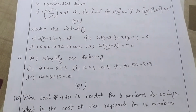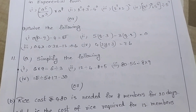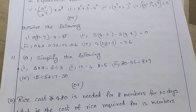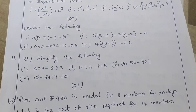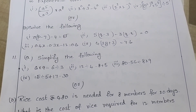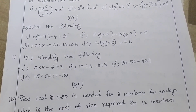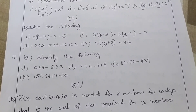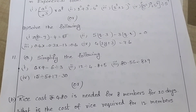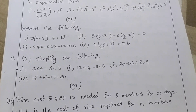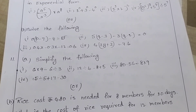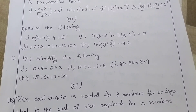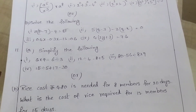Simplify the following: 6 into 9 minus 6 divided by 3; 12 divided by 4 minus 8 plus 5; 80 minus 56 divided by 8 into 9; and 15 divided by 5 plus 17 minus 13.